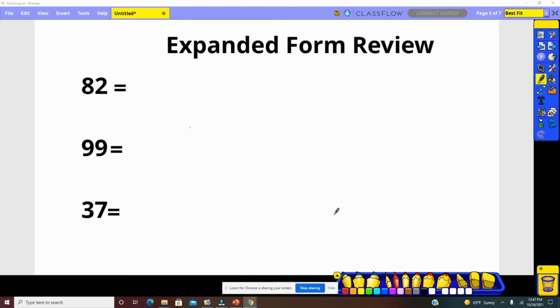Our first number we're looking at is 82. If we are breaking 82 into expanded form, the 8 has a value of 80. The 2 has a value of 2. 80 plus 2 equals 82.